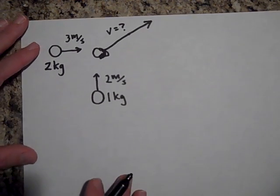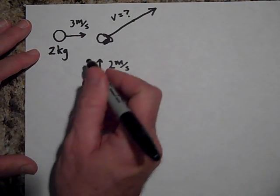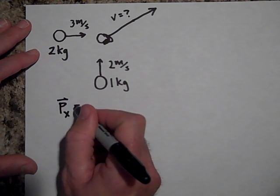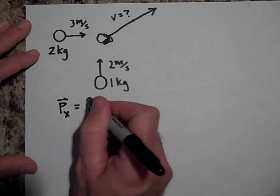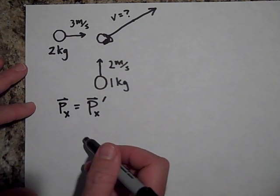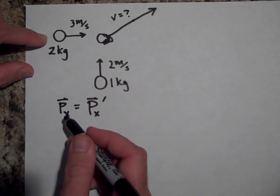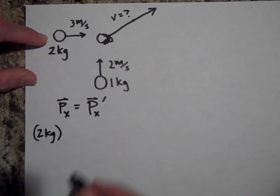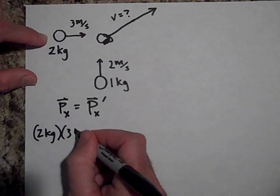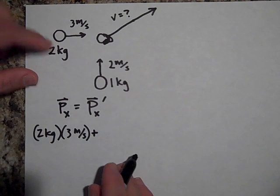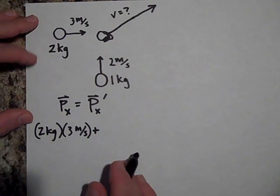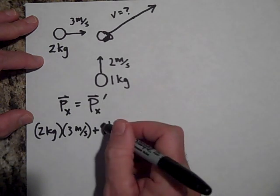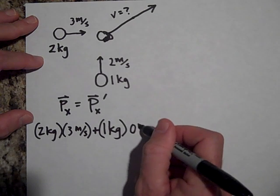We can look at these in separate directions. Since there's no net force in the x-direction, the momentum in the x-direction before equals the momentum in the x-direction after. The momentum in the x-direction of the two-kilogram blob is two kilograms times three meters per second. Plus the momentum of the one-kilogram blob in the x-direction — but how much of its two meters per second is in the x-direction? None of it.